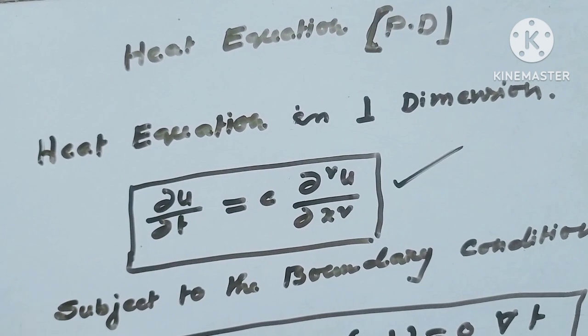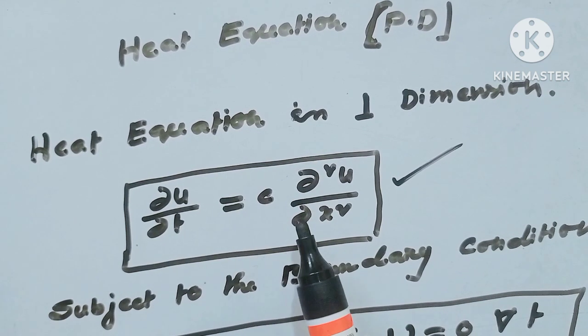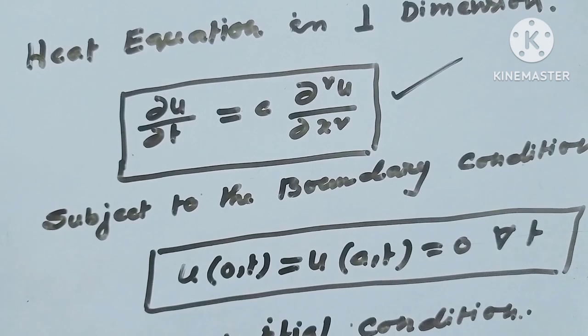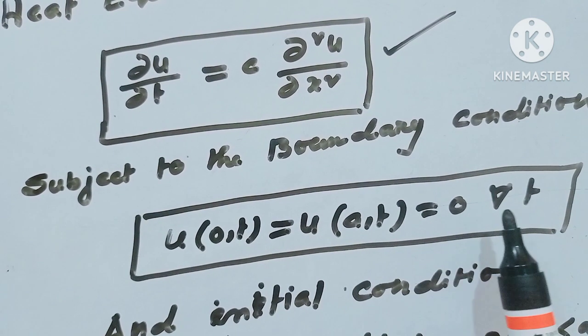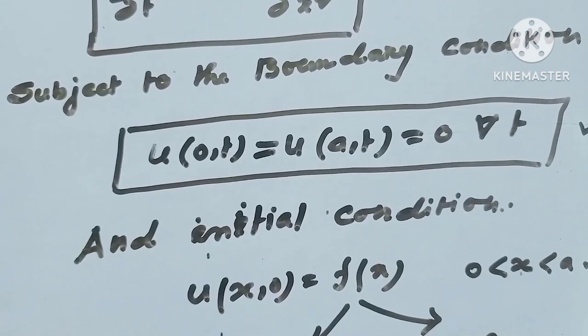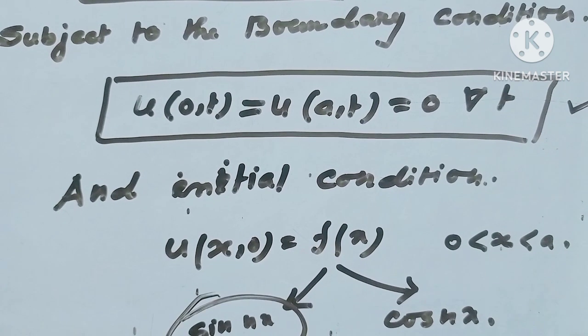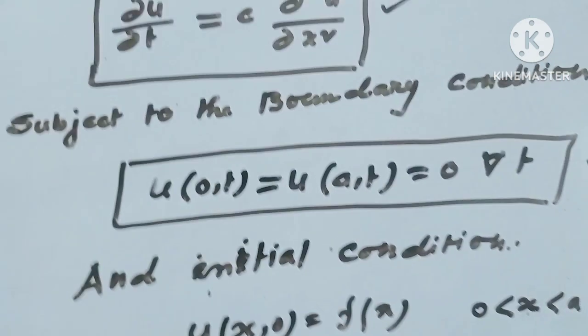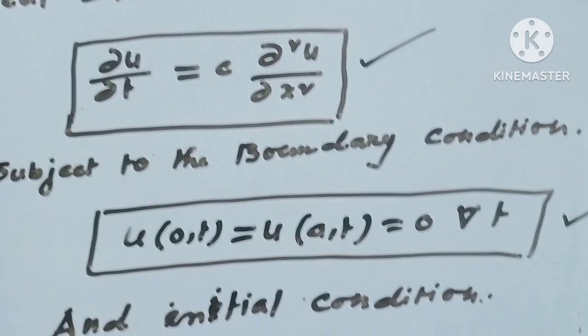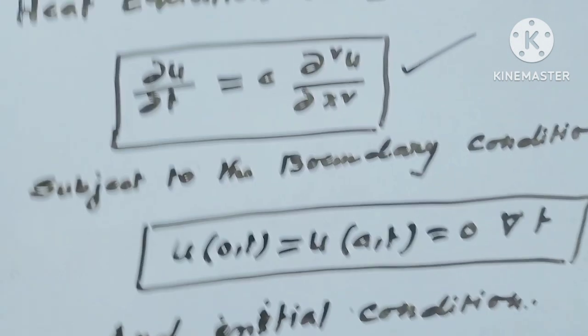I highly recommend you watch today's video with full attention, because this shortcut trick is very important to solve any question in 15 seconds. The heat equation in partial differential equations in one dimension looks like: del u / del t = c * del²u / del x², subject to boundary conditions u(0,t) = u(a,t) = 0 for all t, and initial condition u(x,0) = f(x), where f(x) = sin(nx) or f(x) = cos(nx). This is the heat equation.